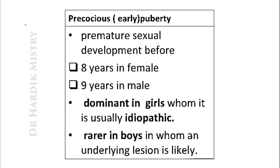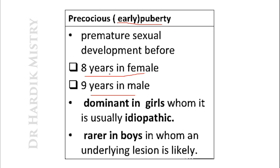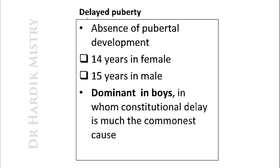Applied aspects: First, precocious puberty, also known as early puberty. This involves development of premature sexual characteristics occurring before 8 years in females and before 9 years in males. It is more commonly seen in girls, in whom it is usually idiopathic — without any specific reason. It is rare in boys, in whom an underlying reason is more likely.